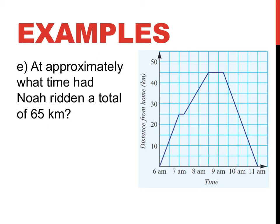At approximately what time had Noah ridden a total of 65 kilometers? Well, by his second rest break, so by this point here, Noah had ridden 45 kilometers.